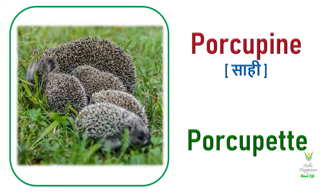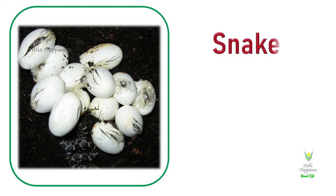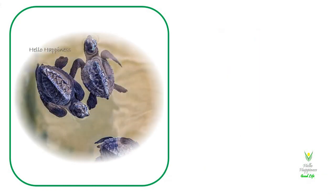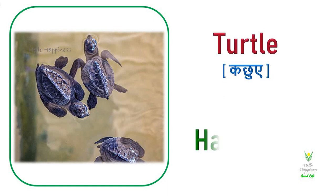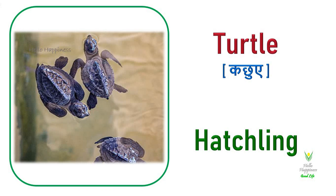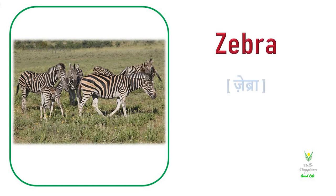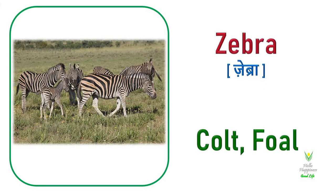Porcupine. Porcupine's young one is called a Porcupette. Snake. Snake's young one is called a Snakelet or Hatchling. Turtle. Turtle's young one is called a Hatchling. Zebra. Zebra's young one is called a Colt or Foal.